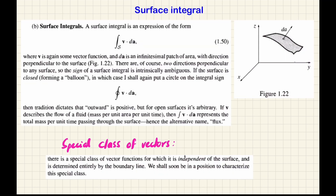We move on to the surface integral. In the surface integral, the integration is carried over a specified surface S. If we consider our surface, we divide it into patches. We have a patch and a direction that is perpendicular to it. This patch is a very small part of the surface. This patch has two directions.